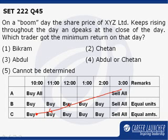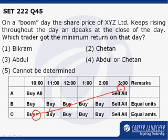Now let us see what happens to A. A buys everything at 10 a.m. and sells everything at 3 p.m. Now obviously, his return is going to be the maximum because all his money has seen the appreciation which has happened, which is all of the appreciation from 10 to 3.